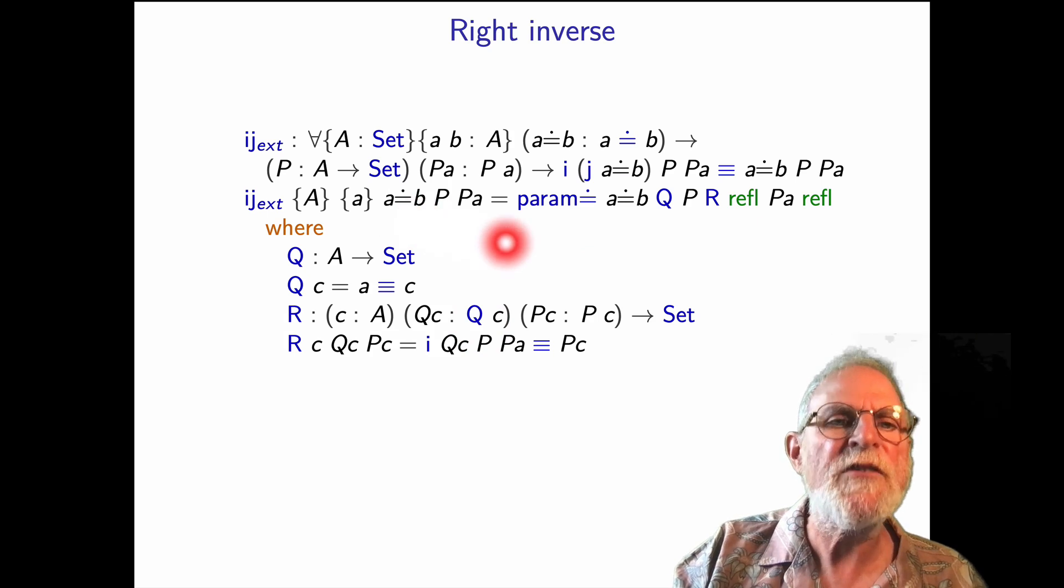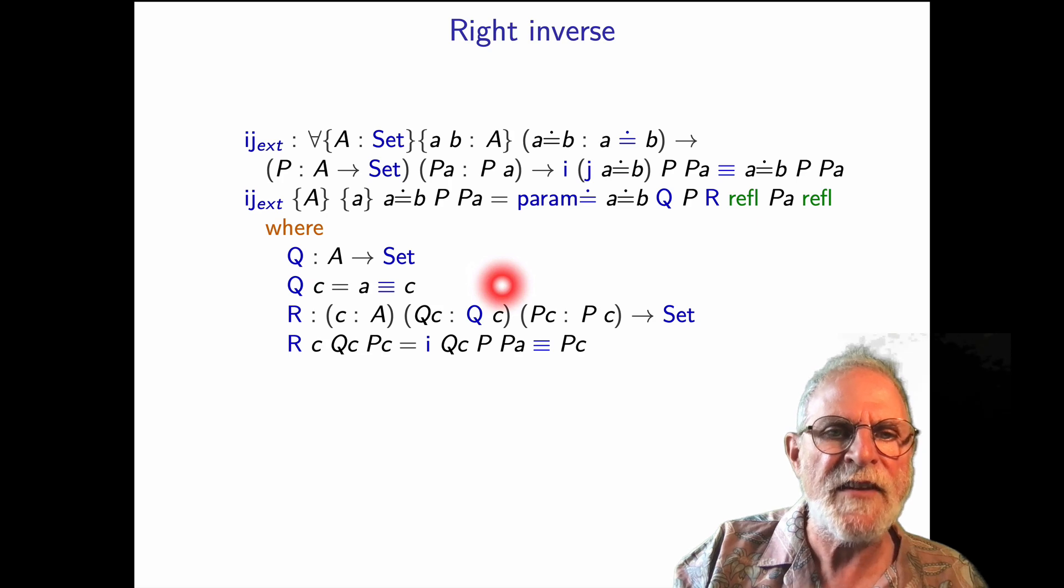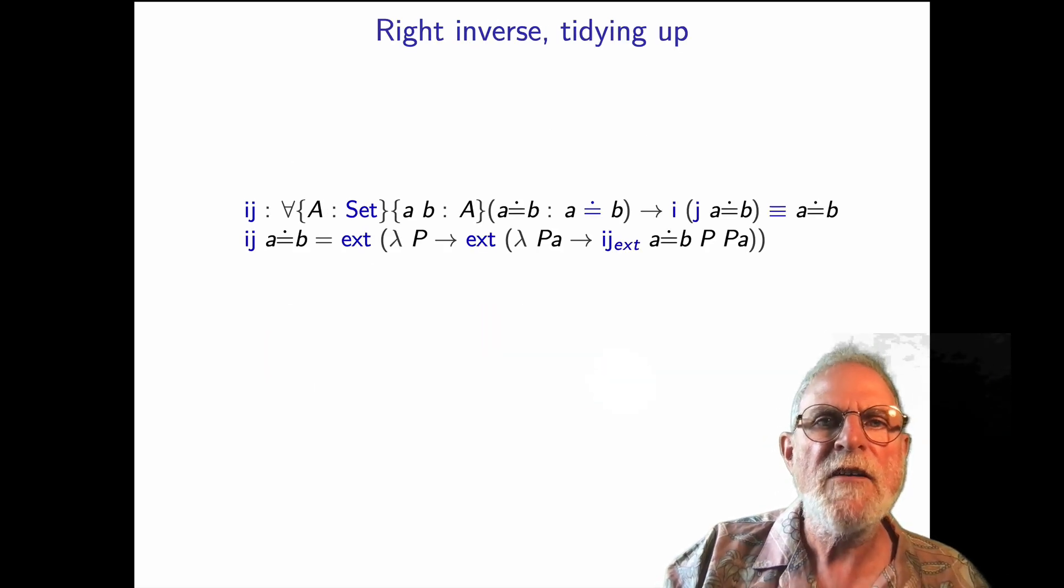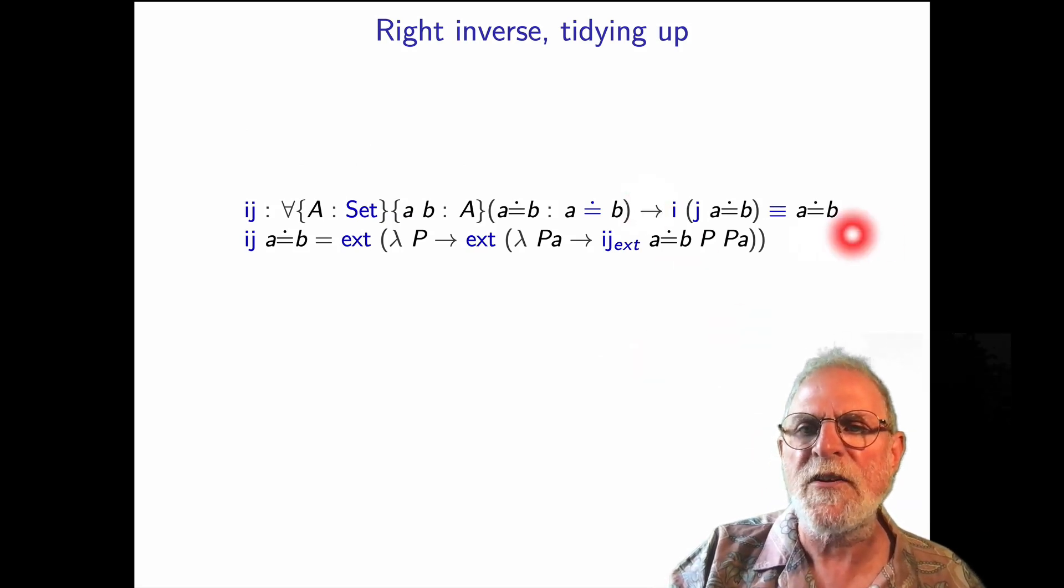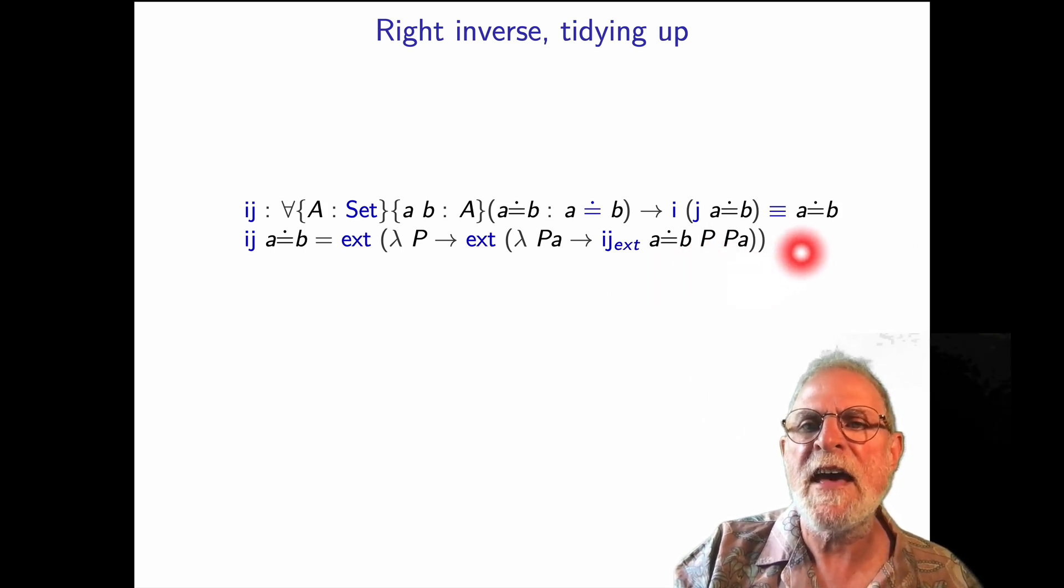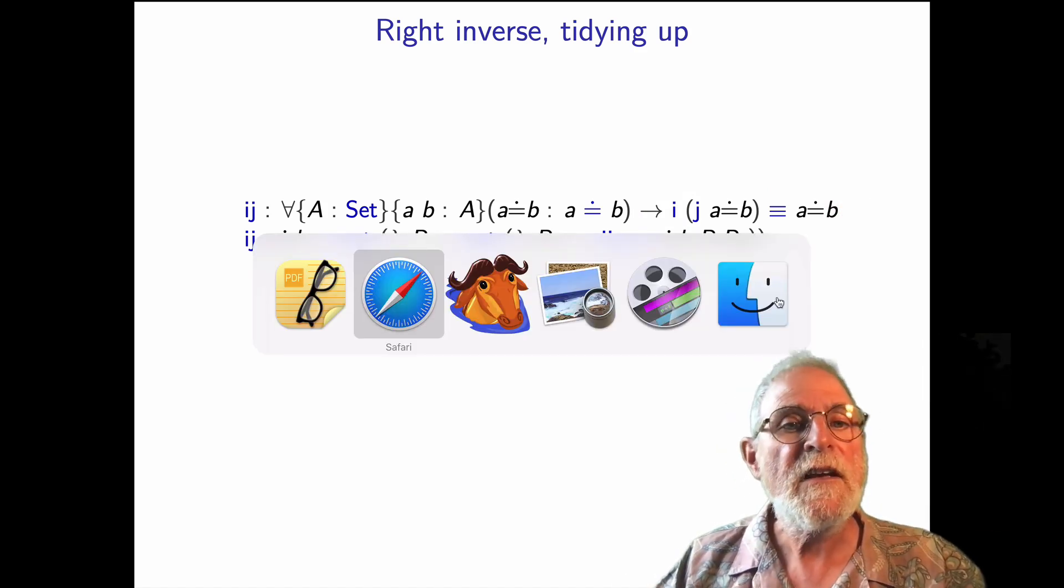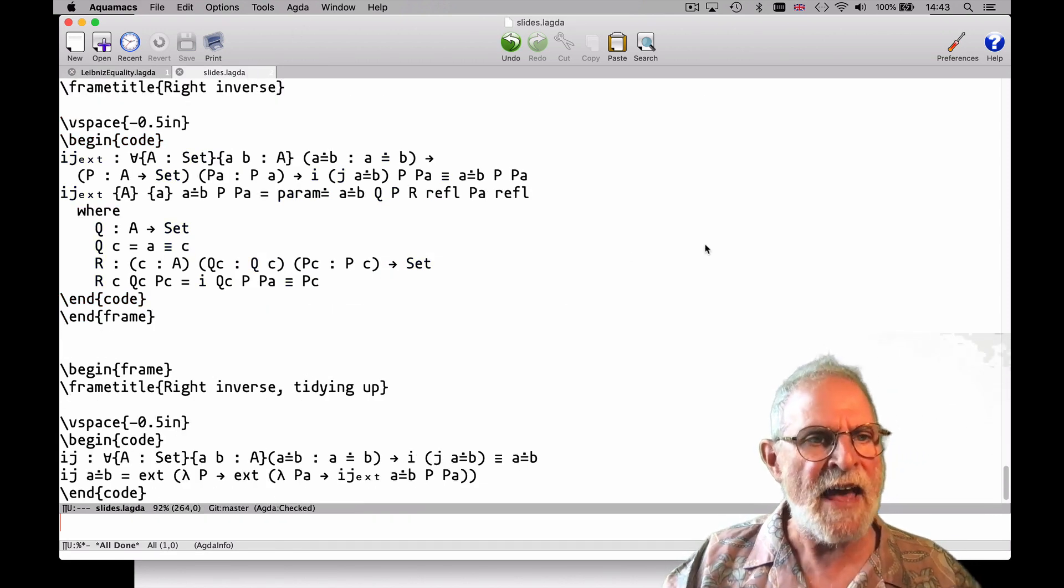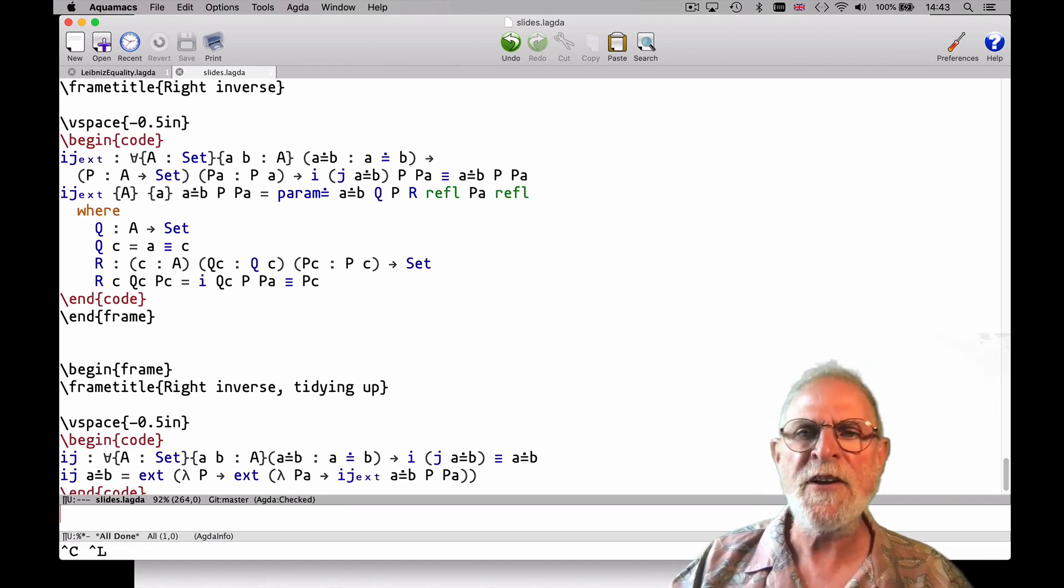And then finally we get the proof of right inverse. Again, I'm not going to go through that in detail, but it uses parametricity. It uses exactly the same Q of c that we used to prove to show that the inverse exists and a suitably defined relation. I'll leave the details of that for later. And then by applying extensionality, we actually get that it's an actual inverse here, because before we just showed this when applied to arbitrary P and P of a, but here we can show it via extensionality. And that's it. If we go back to the code, you can see that this has all been written again as literate Agda, and indeed that main result is true. Thank you for your time.